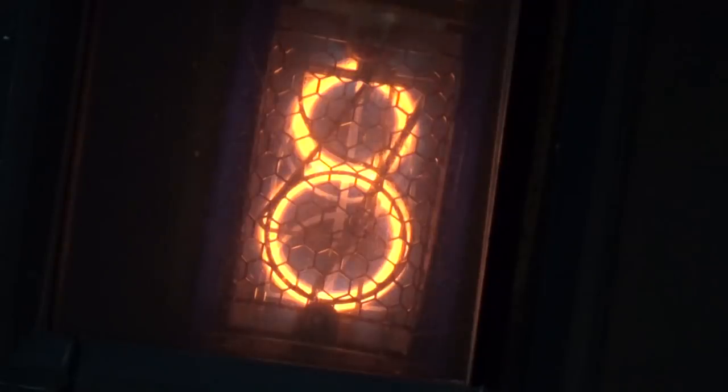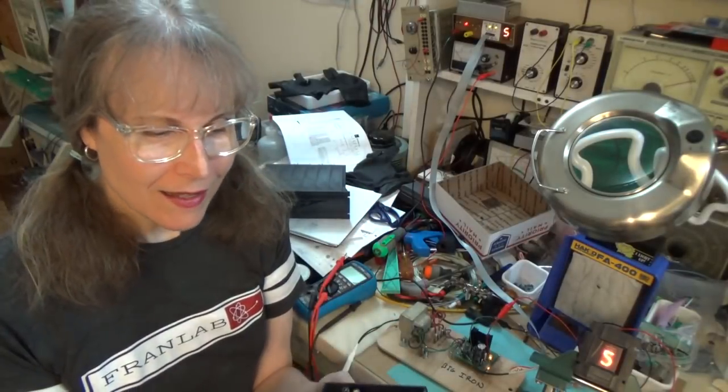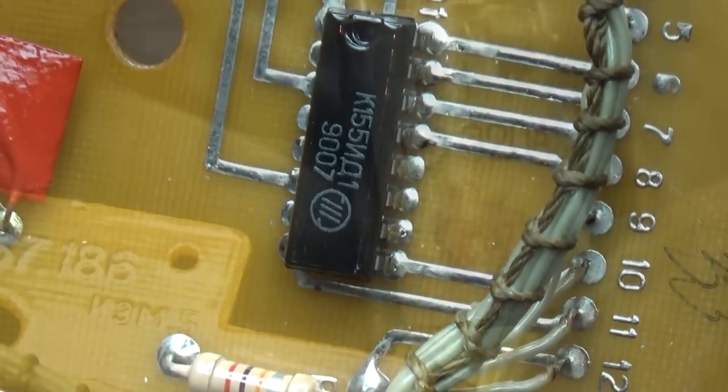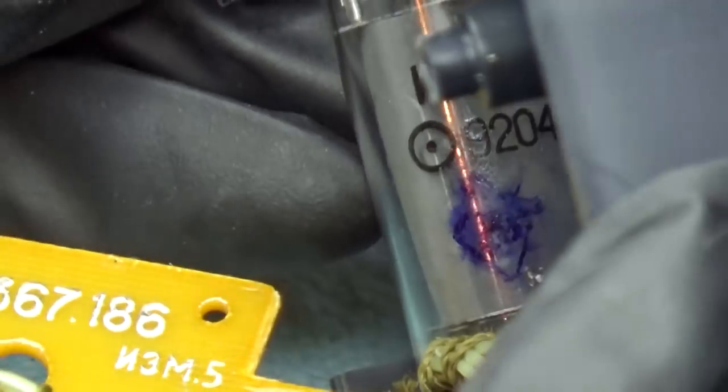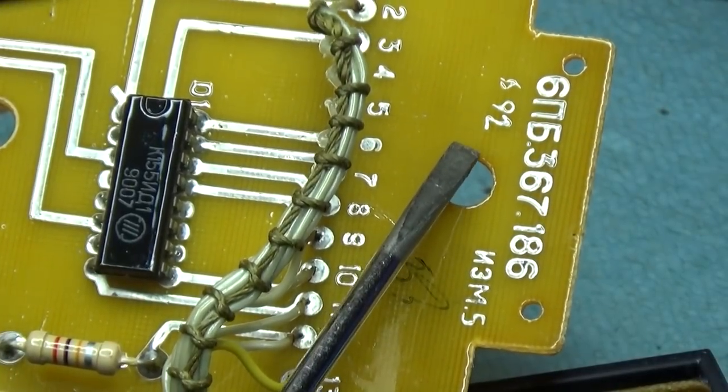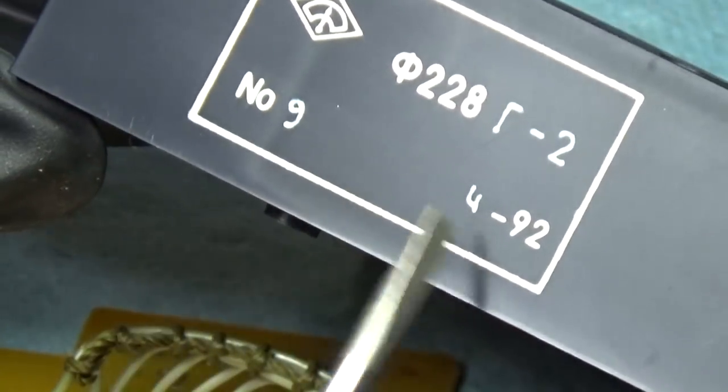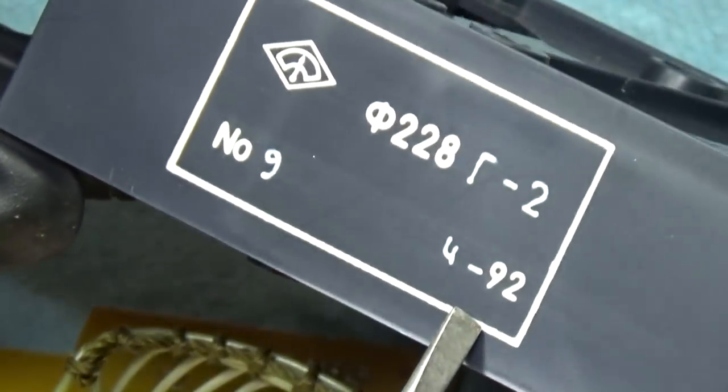Interesting thing about these tubes and the chips in them is when they were made. The chips are decoded 1990, and the tubes and the circuit board are decoded 1992. In fact, all the labels on the outside of the modules also say 492, whether that's the fourth week or fourth month, I don't know.